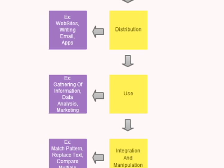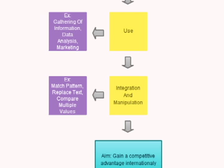The third part is the usage — gathering this information, doing some data analysis on this information for marketing or other purposes. The last part of a global information society is integration and manipulation. Some examples would be matching patterns, replacing text, or comparing multiple values.